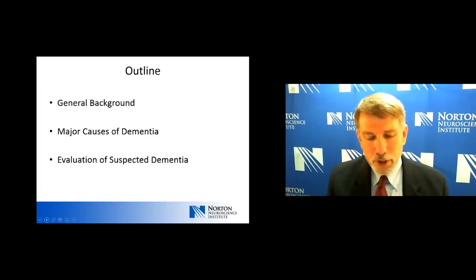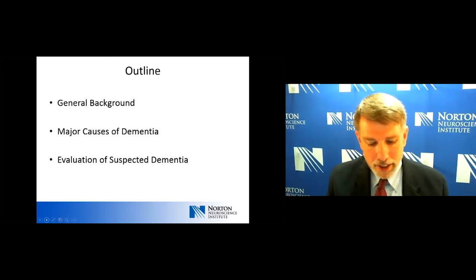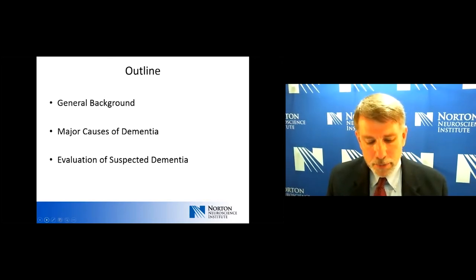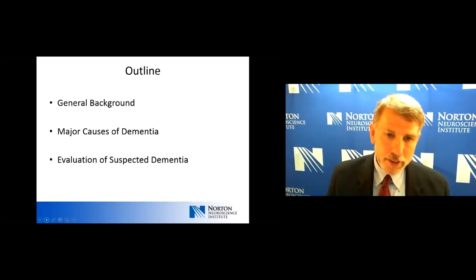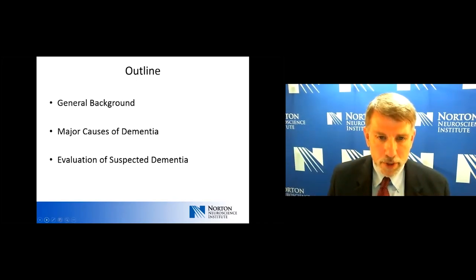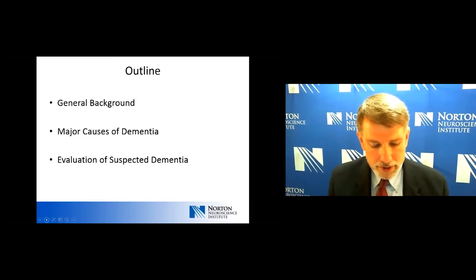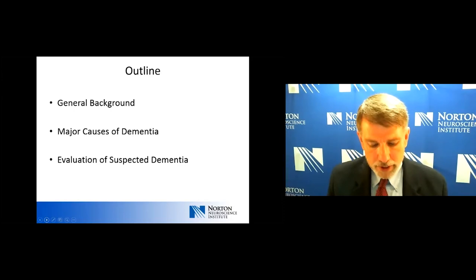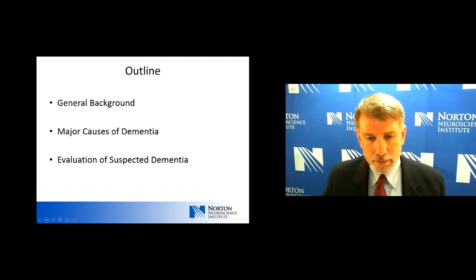I'll give some general background talking about cognition and aging generally, really looking at that spectrum from normal to abnormal. Then I'll discuss some of the major causes of cognitive impairment or dementia, really focusing on those over the age of 65, and then we'll move into an evaluation of individuals with a suspected dementia.